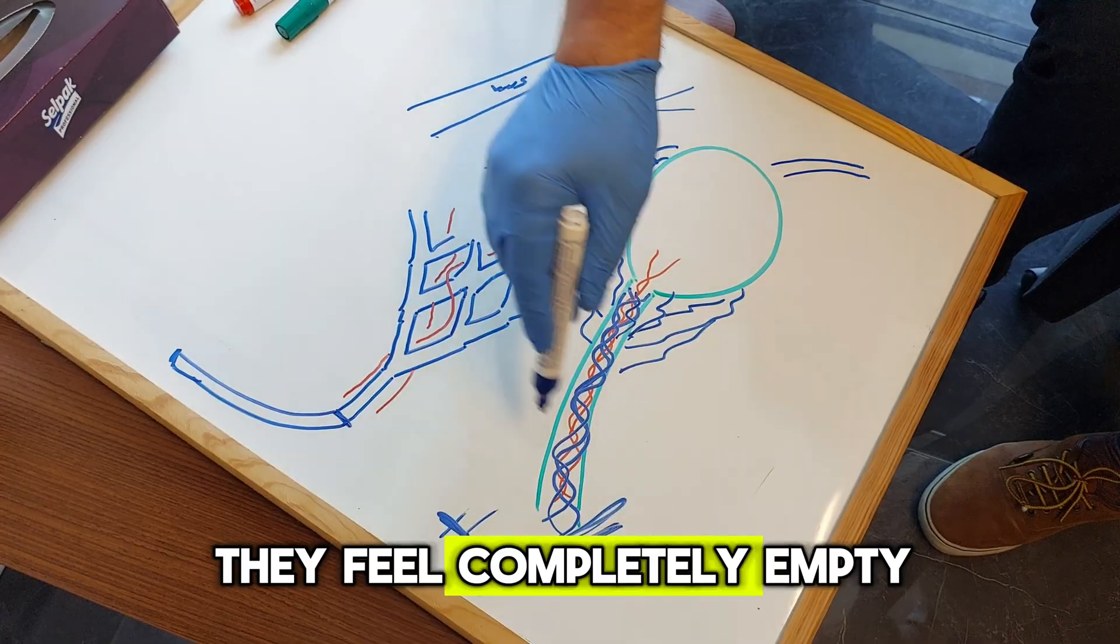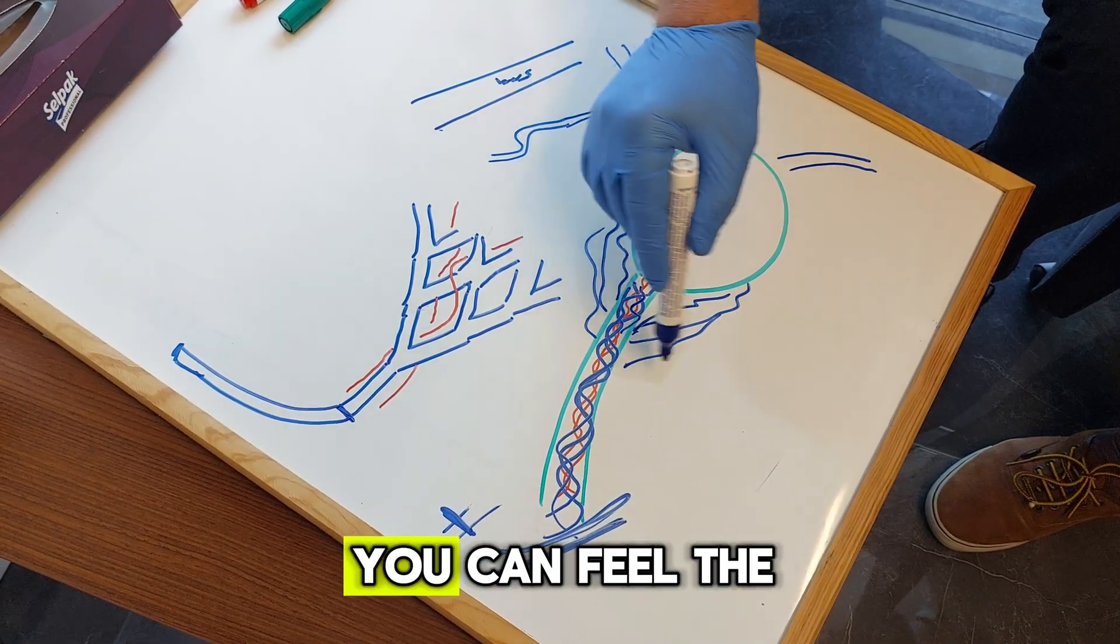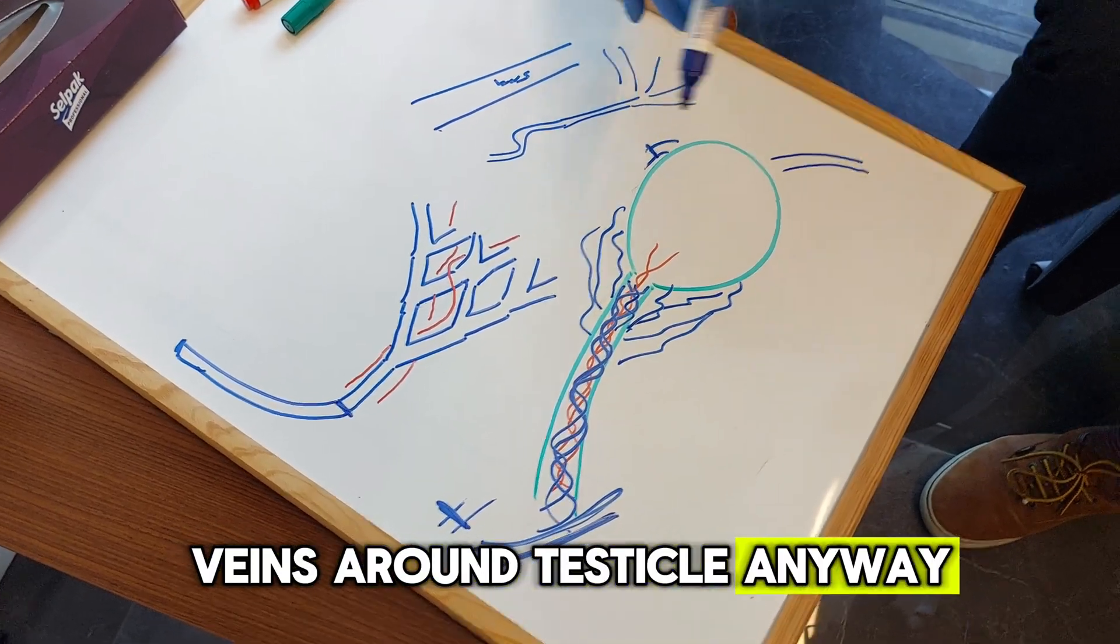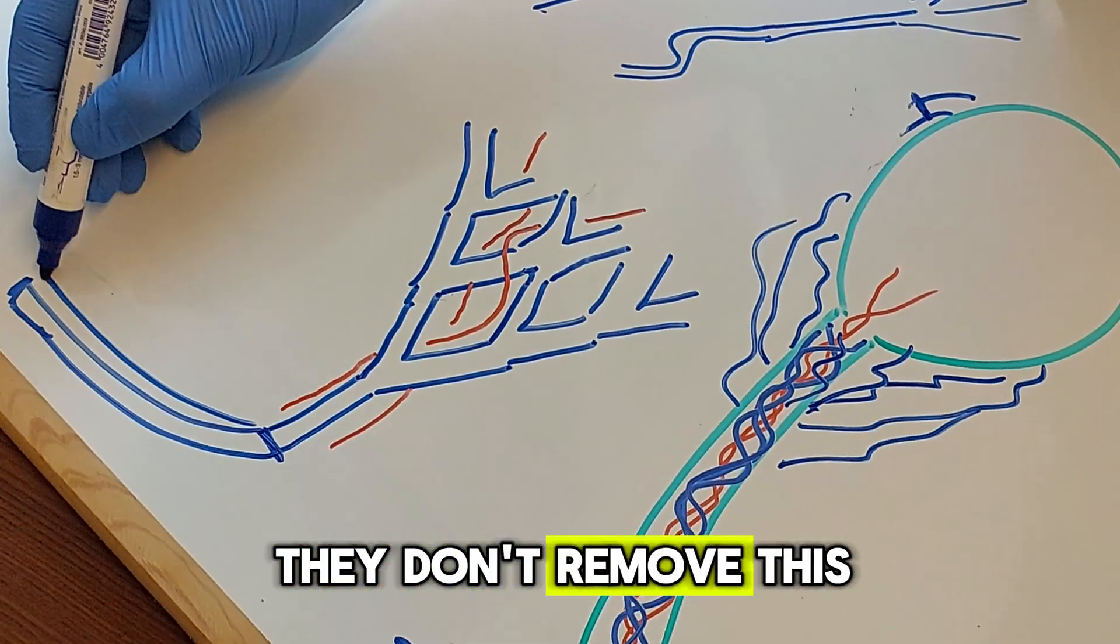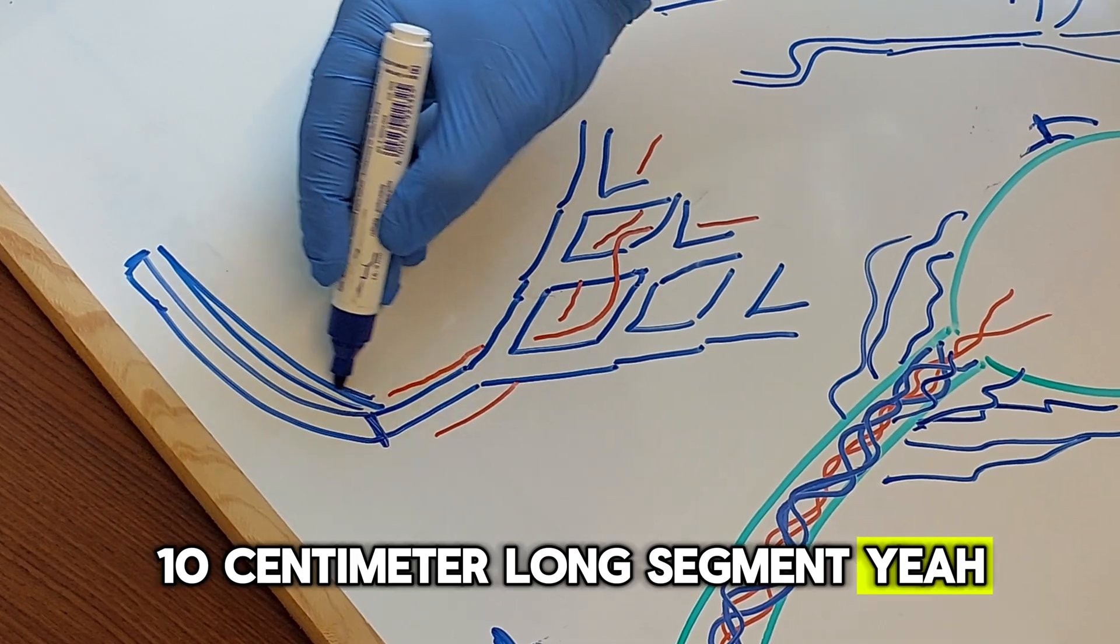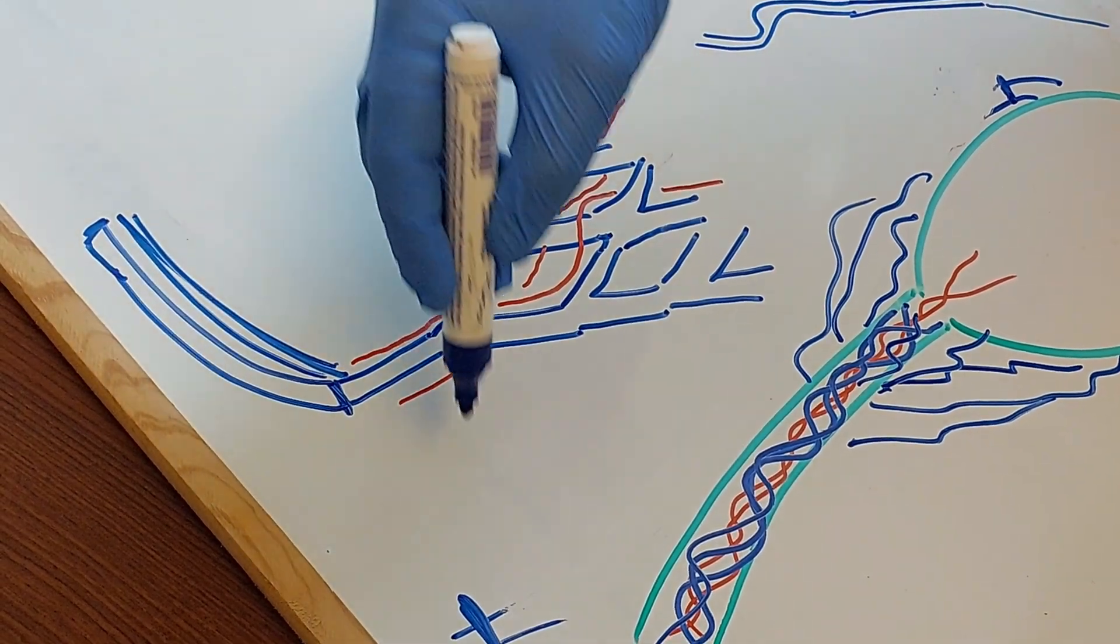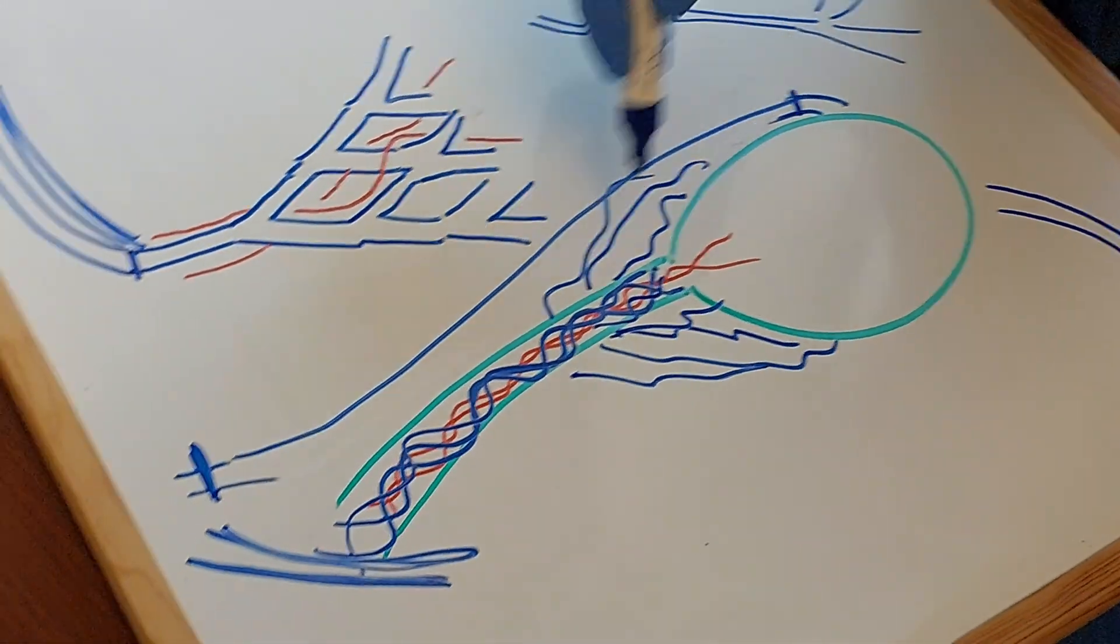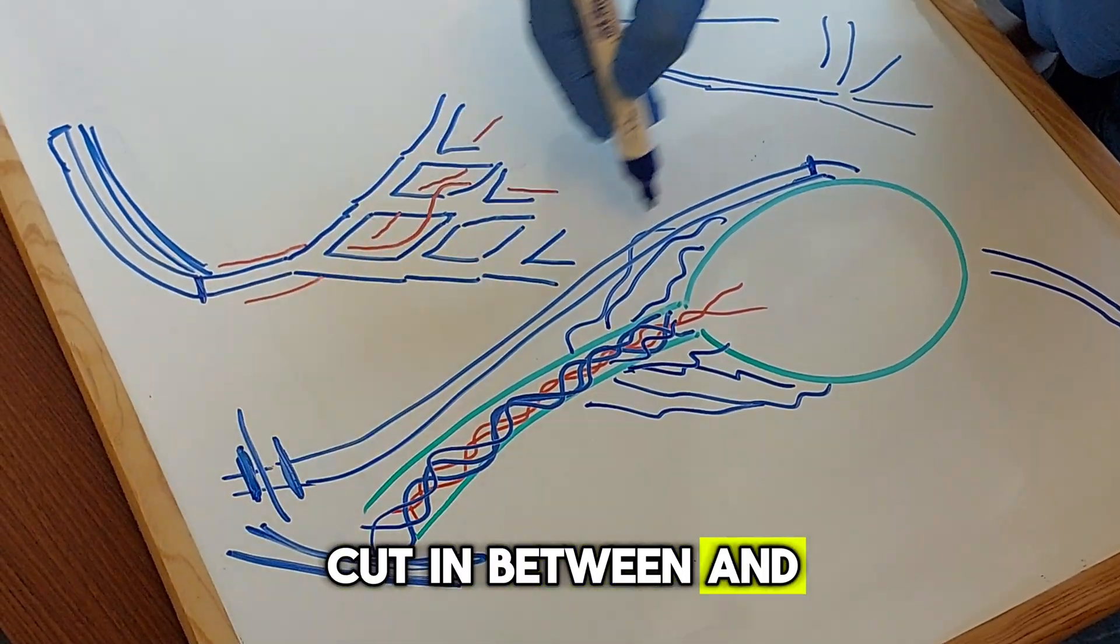Anyway, in normal conventional procedures they don't remove this ten-centimeter long segment, so it increases our success rate. And they don't remove this external vein. They just make a ligation here, ligation here, cut in between and expect this vein to resorb.